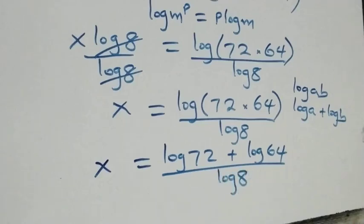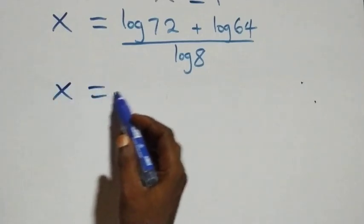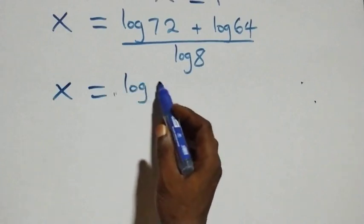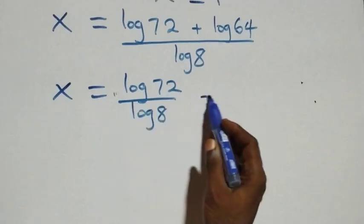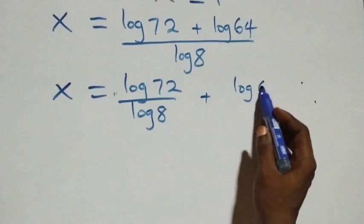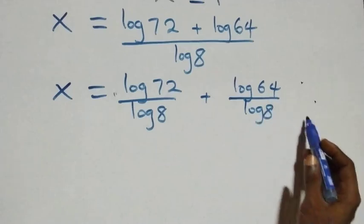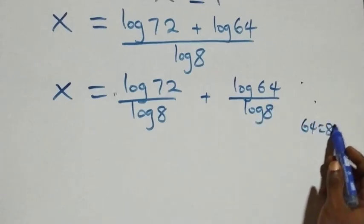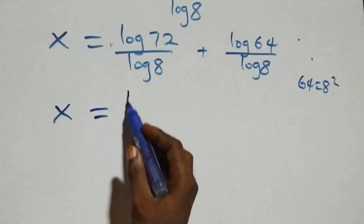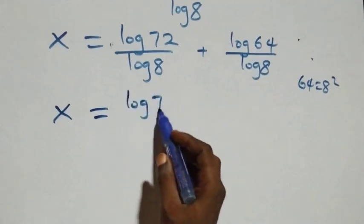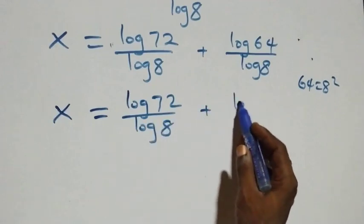We separate this into two fractions: x equals log 72 over log 8 plus log 64 over log 8. And since 64 equals 8 squared, this becomes x equals log 72 over log 8 plus log 8 squared over log 8.